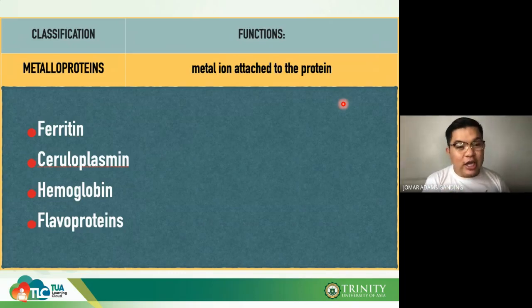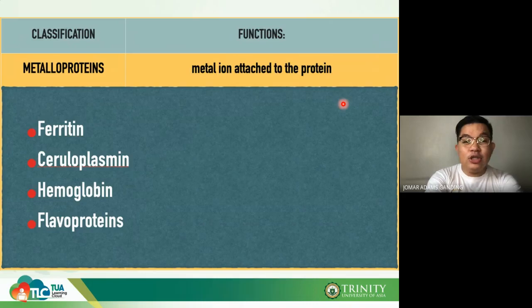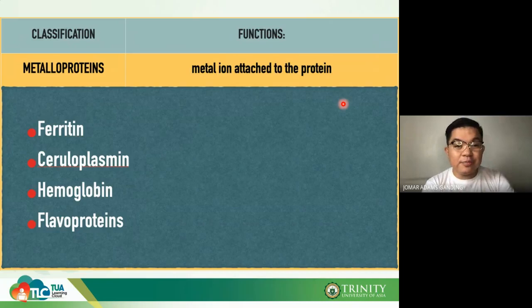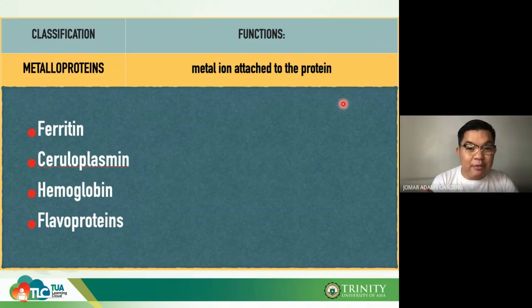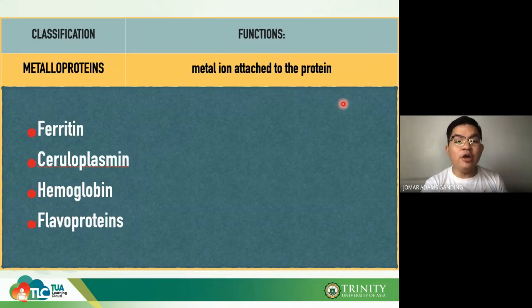Hemoglobin also contains iron, but a different type — ferrous iron, not ferric. This is an important distinction to remember: ferritin contains ferric iron, while hemoglobin contains ferrous iron.